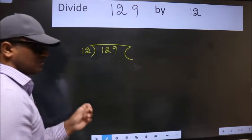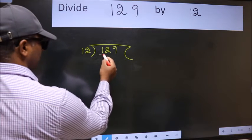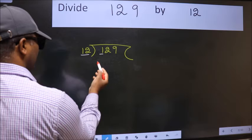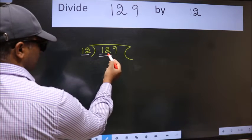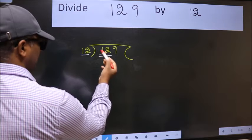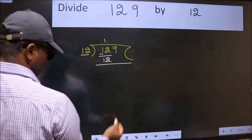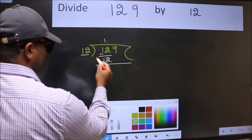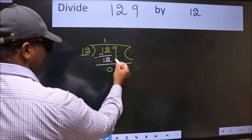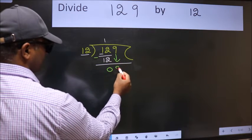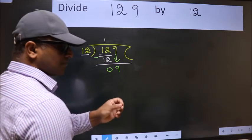This is your step 1. Next, here we have 1 and here 12. 1 is smaller than 12, so take two numbers. 12, when do we get 12 in 12 table? 12 once 12. Now we should subtract, we get 0. After this, bring down the beside number, so 9 down.